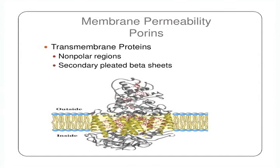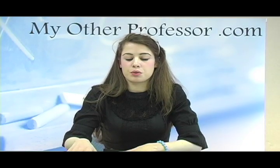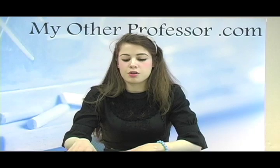There are also porins related to membrane permeability. These are also transmembrane proteins that have nonpolar regions and are composed of secondary pleated beta sheets. These beta sheets form a motif and fold back and forth across each other — they're shaped like a barrel.